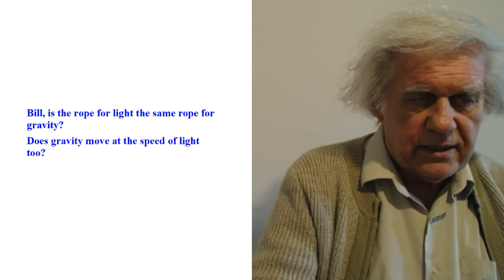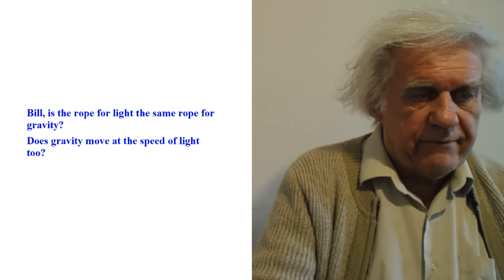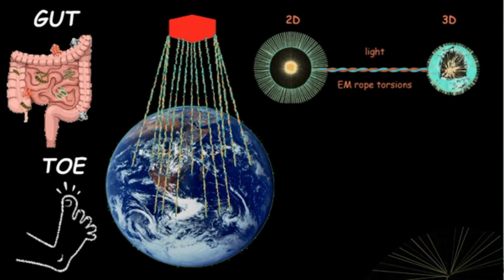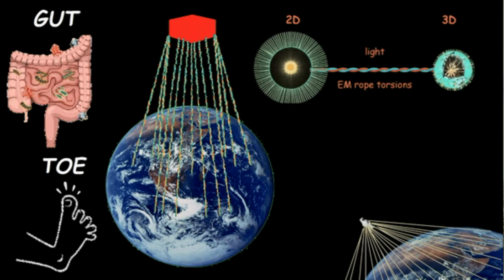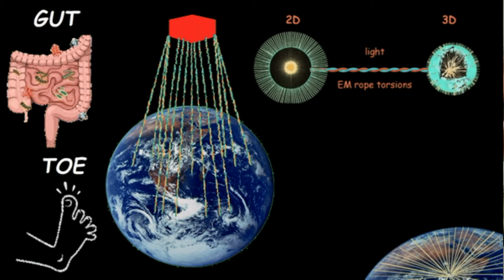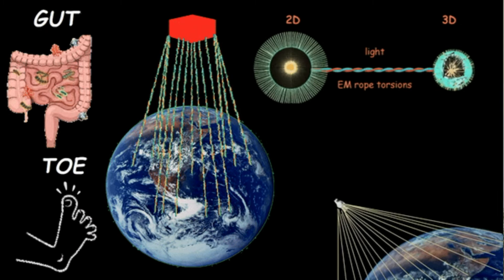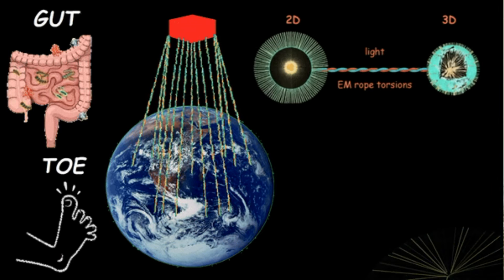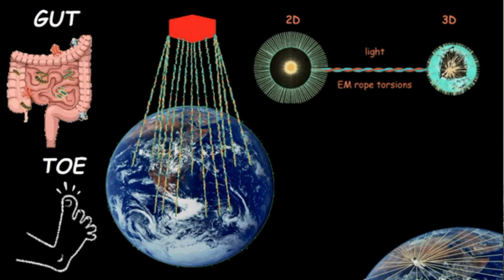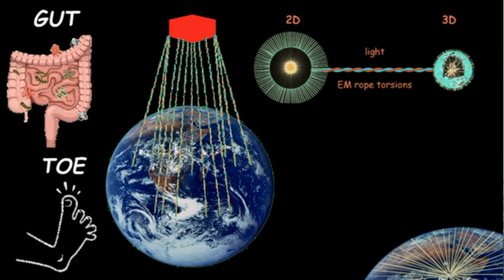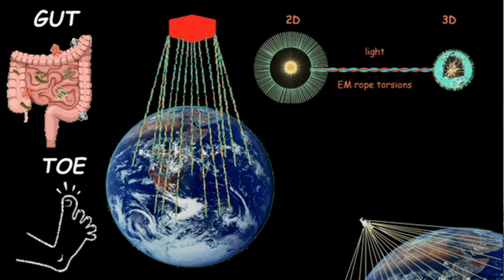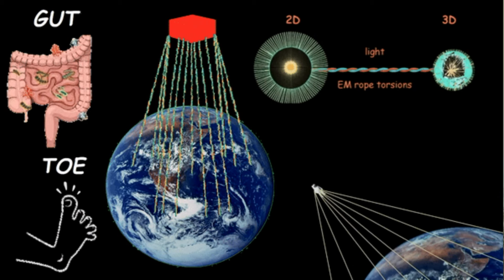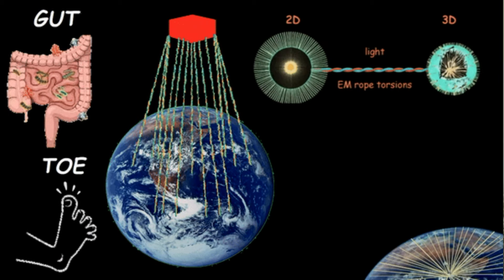Now let's go with the first issue: is the rope for light the same rope for gravity? The answer is yes, but we have to put it in the right context. The rope is really the GUT — Grand Unified Theory — and the TOE — Theory of Everything — that mathematicians have been looking for for years. If you're going to talk about gravity, gravity is mediated by all these ropes that connect every atom of, in this case a box, to every atom on Earth. We have all these electromagnetic ropes binding one atom to every atom on Earth and vice versa.